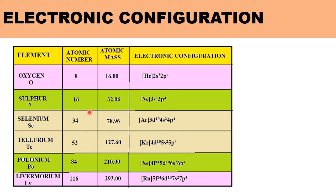Sulphur has atomic number 16, atomic mass number 32.06, and the electronic configuration is [Ne] 3S2 3P4. For Selenium, atomic number 34, mass number 78.96, and electronic configuration is [Ar] 3D10 4S2 4P4.